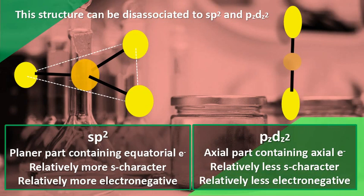The PZ-DZ² component is the axial part containing axial electrons. The percentage of S-character is less in this case. Therefore, axial electrons experience less electronegativity.